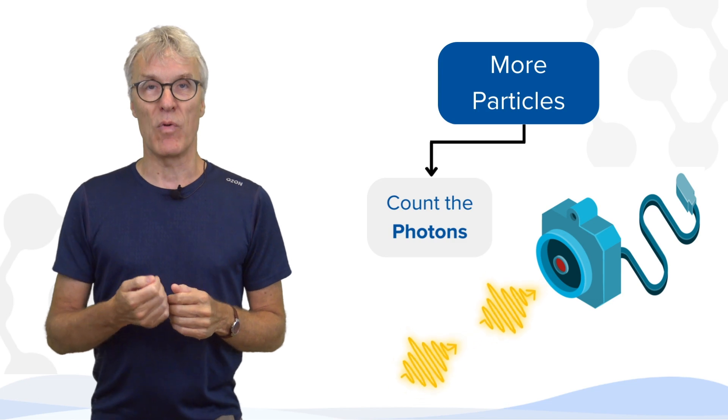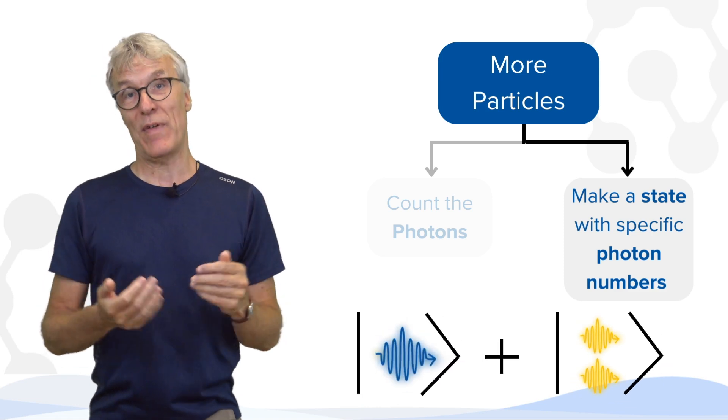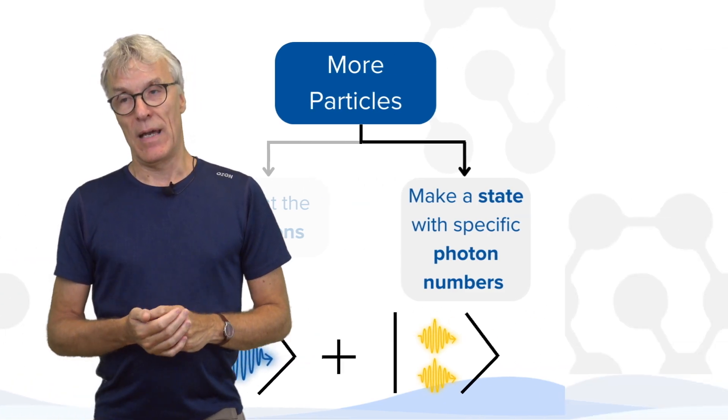We count the photons or we make a state which has either one photon number or another one or both at the same time, one of the crazy elements of quantum mechanics.